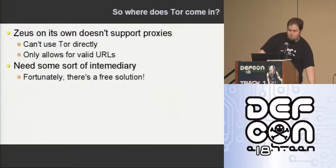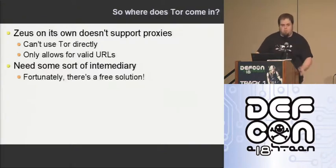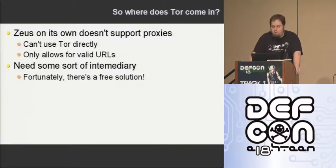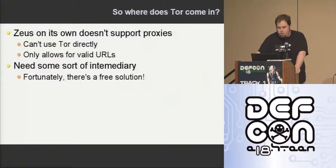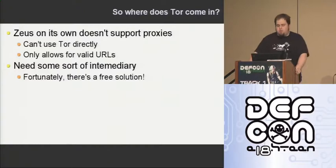So where does Tor come in? Zeus on its own doesn't support proxies — we can't just say go to the dot onion domain and hit our hidden service. That doesn't work at all. Zeus only allows for regular URLs — pretty much anything you can hit normally with your web browser. It doesn't have any proxy support, not the Windows proxy or anything. So we need a little intermediary solution.